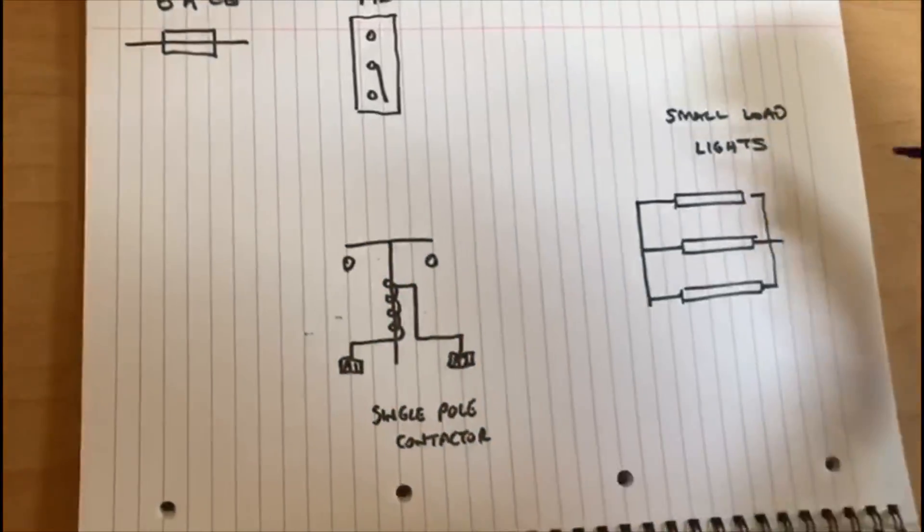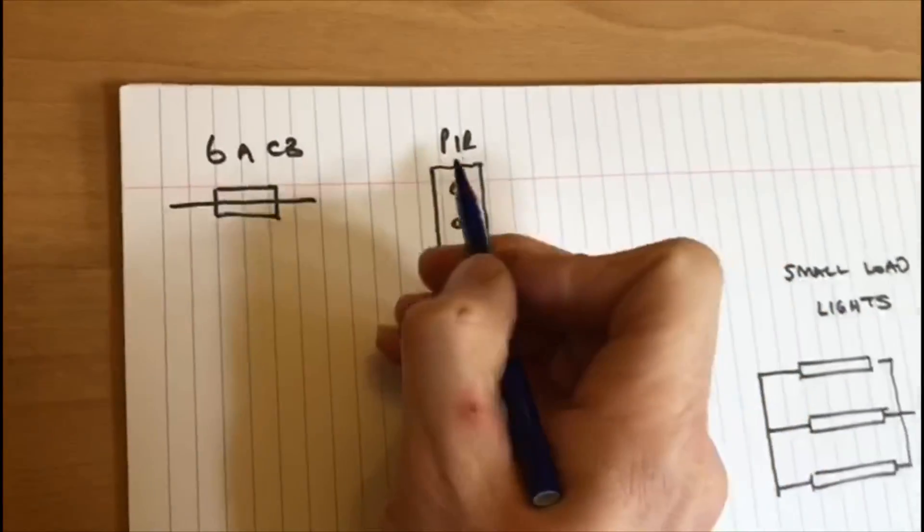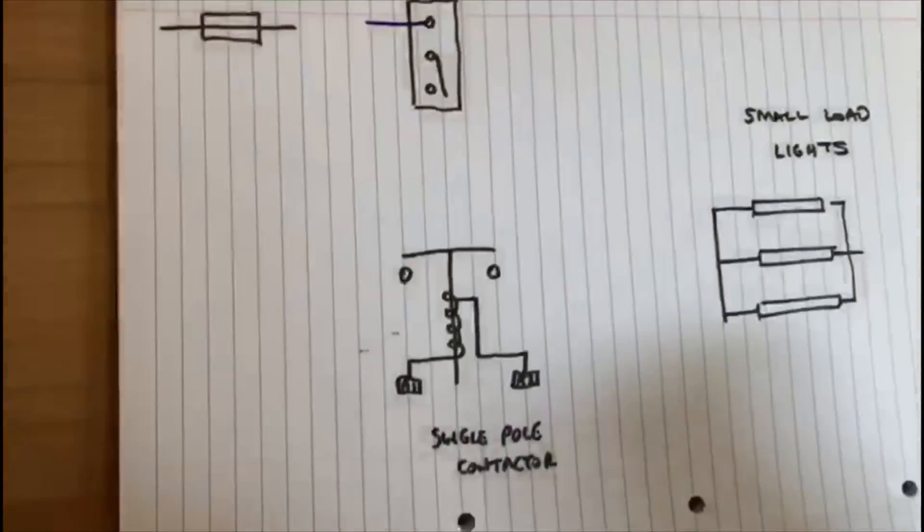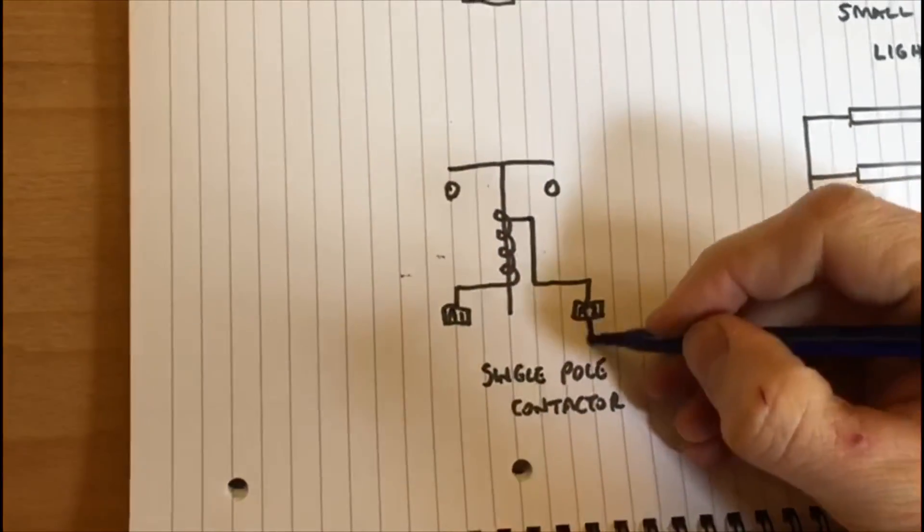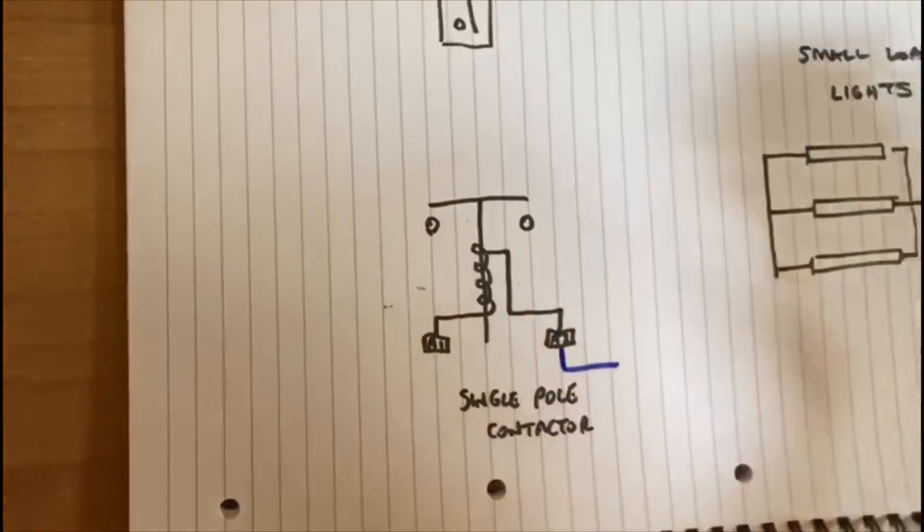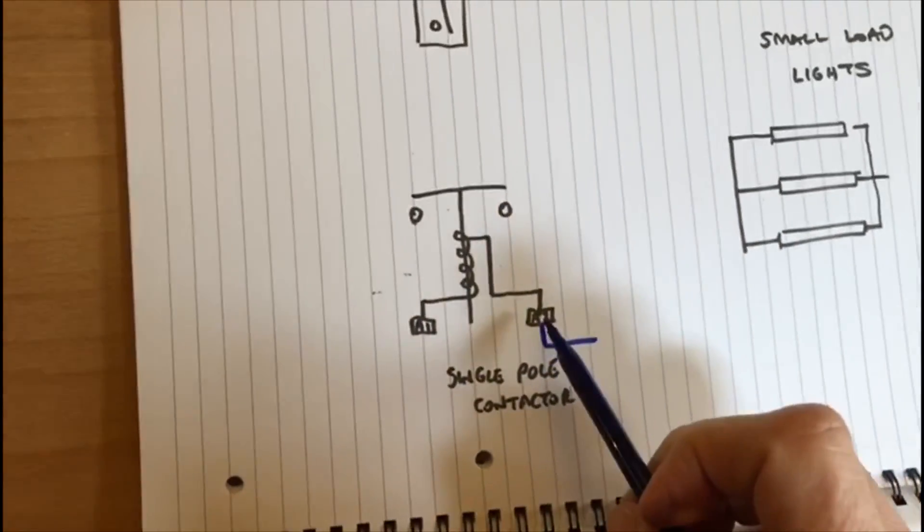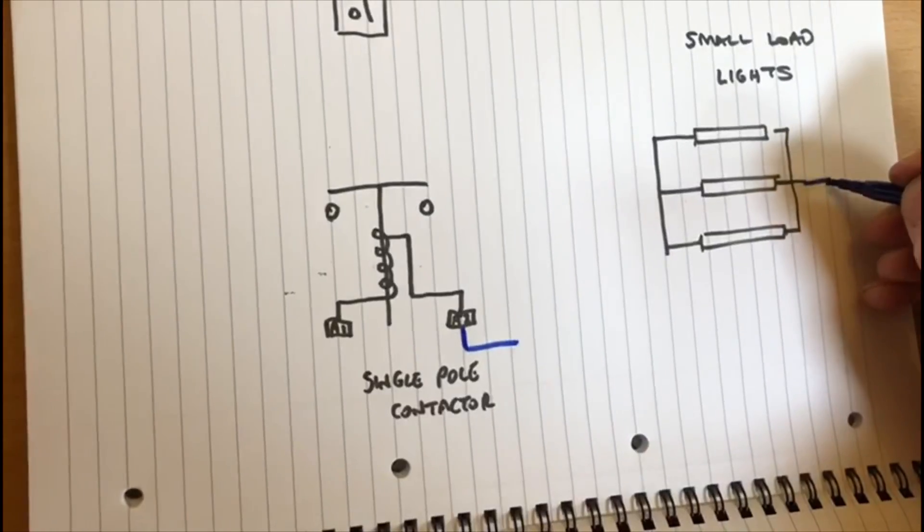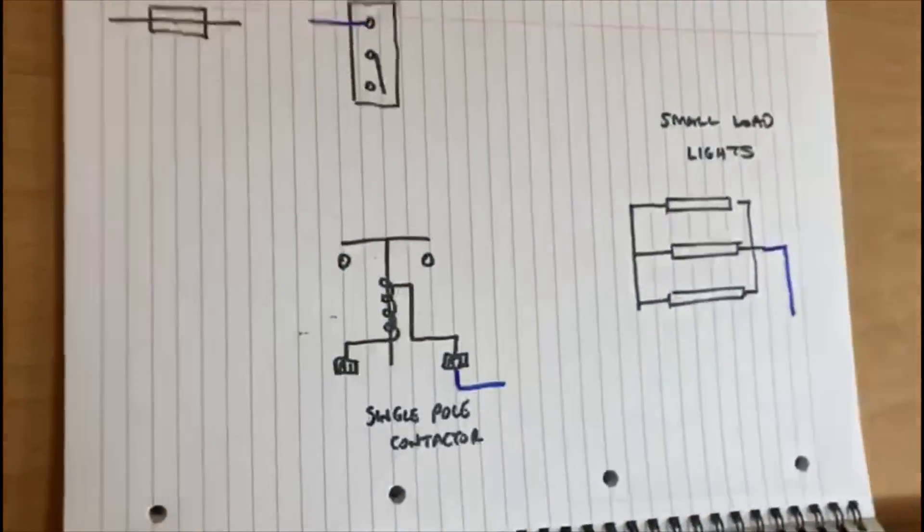The first things we need to take neutrals to the relevant places. So there's going to be a neutral going to the PIR, there's going to be a neutral going to the coil termination, so A2 in this case—it could be A1, it doesn't matter—and then also there's going to be a neutral to the lights.